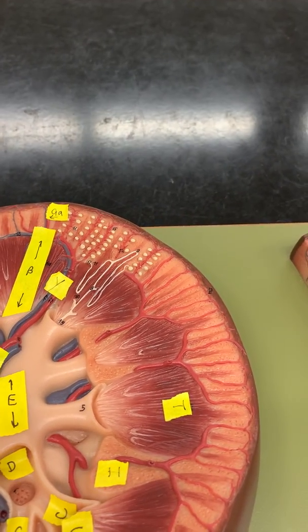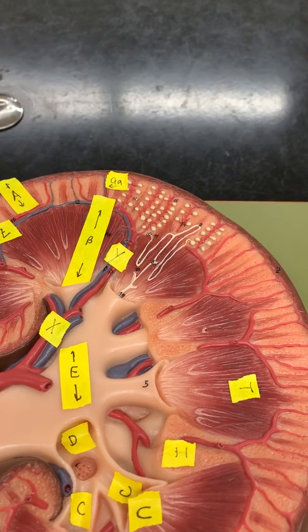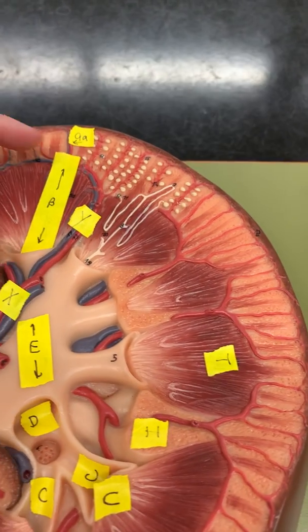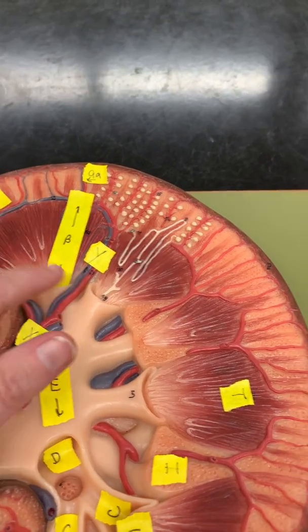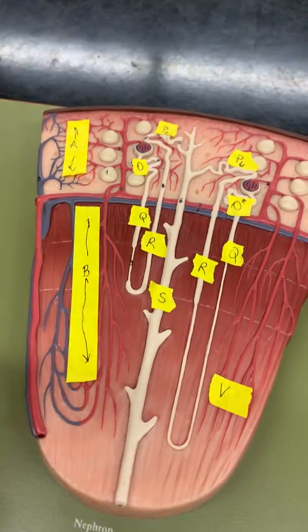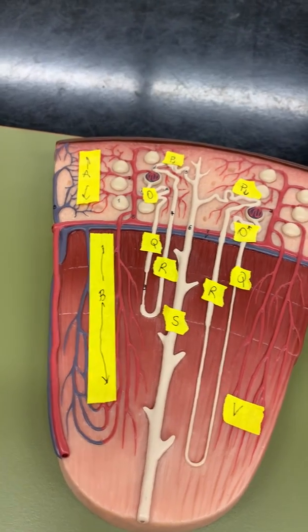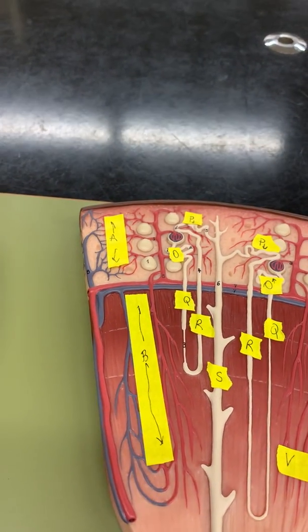Now next is the medulla. Both of those are appropriate. That would be this entire rest of the kidney below the cortex. So here or over here, my tape's not quite long enough, but it goes all the way here. So that's the medulla.